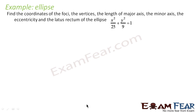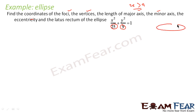Let's take an example of an ellipse where we find coordinates of foci, vertices, length of major axis, minor axis, eccentricity, and latus rectum. For the equation X² / 25 + Y² / 9 = 1, since 25 > 9, this is the standard horizontal ellipse form X² / A² + Y² / B² = 1.